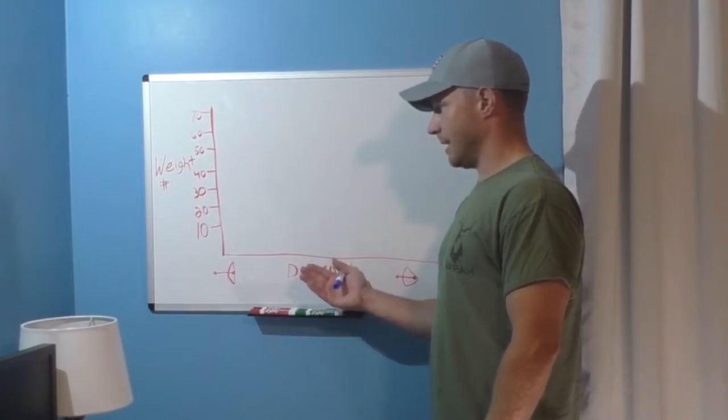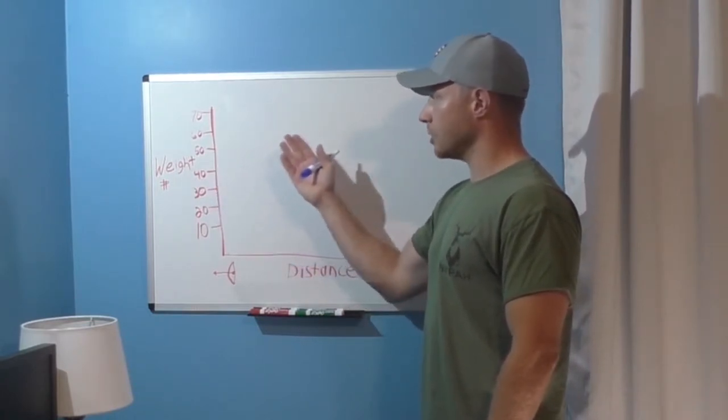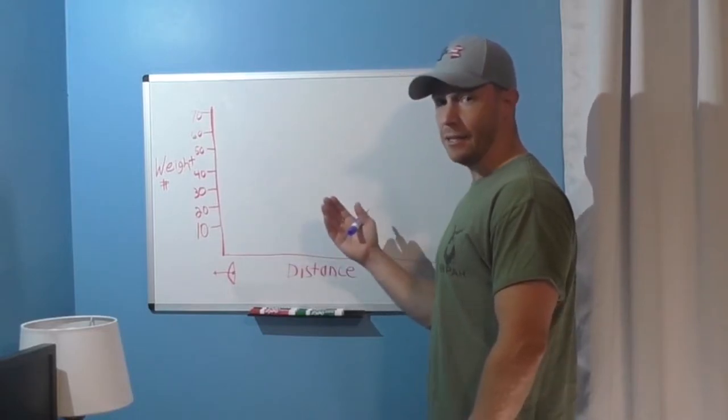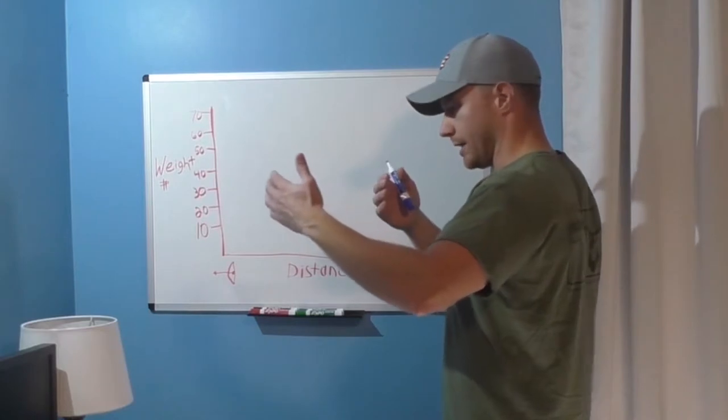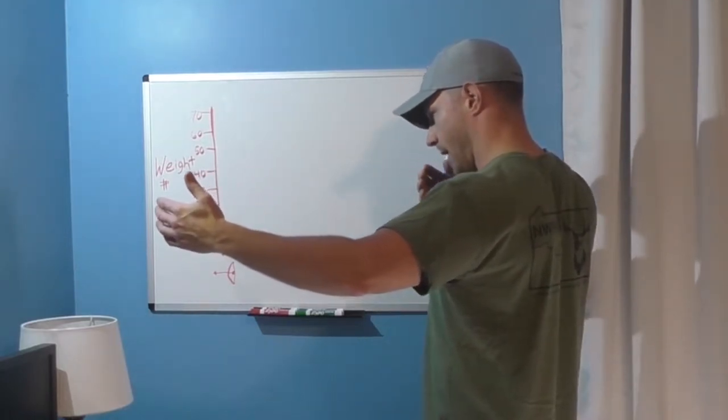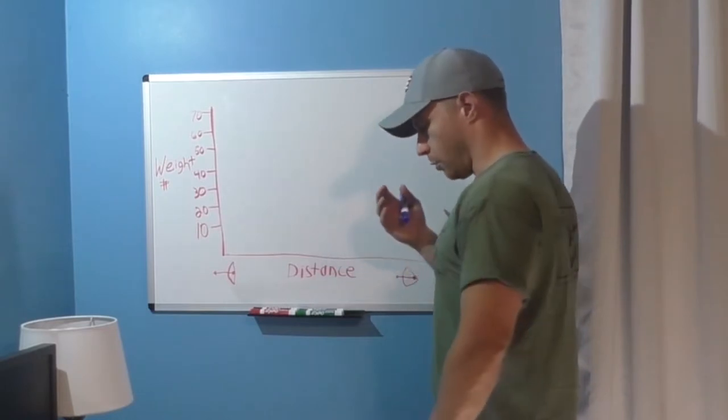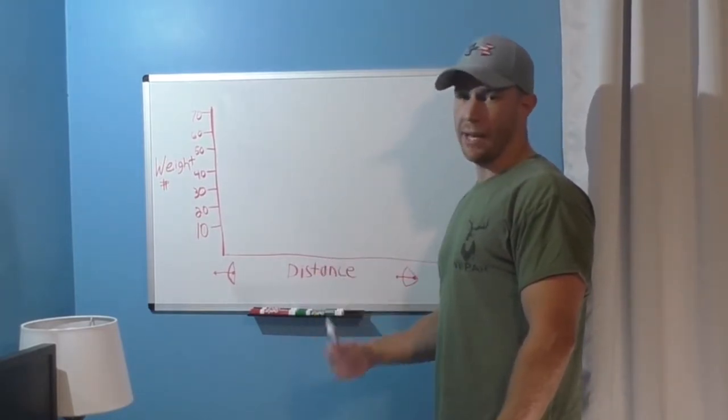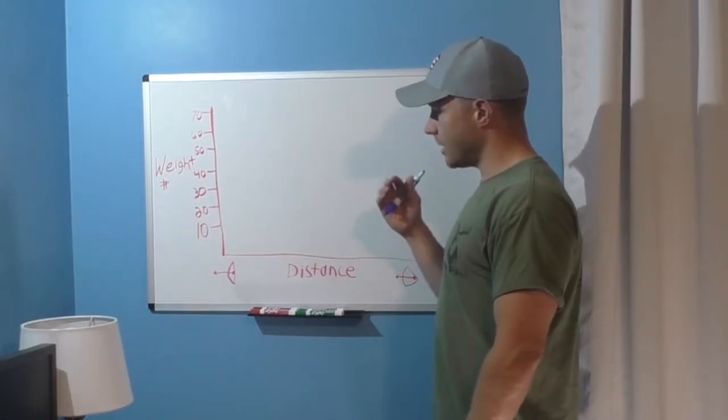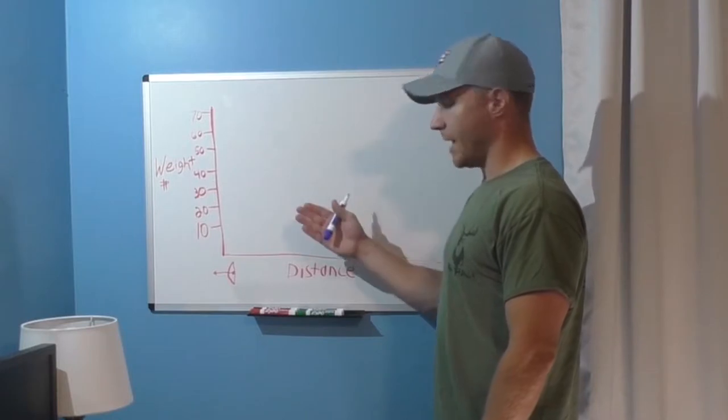So we've discussed this distance but we need to discuss this weight. Now this weight is not your peak draw weight from beginning to end. If you've pulled a bow back you've noticed that the resistance begins to build up, you'll hit your peak draw weight and then it'll let off and typically what's referred to as the valley before you hit that back wall at which point you'll be holding only your let off.